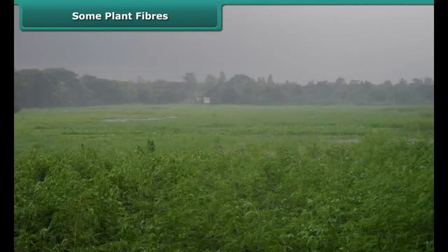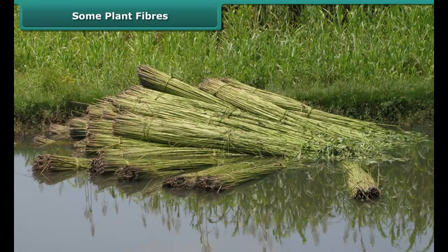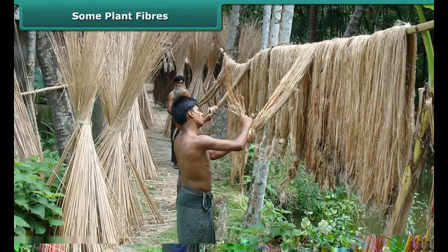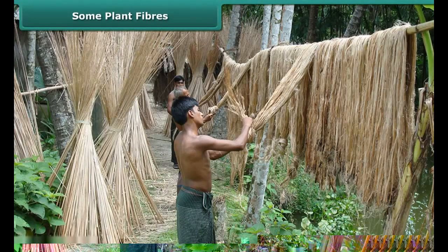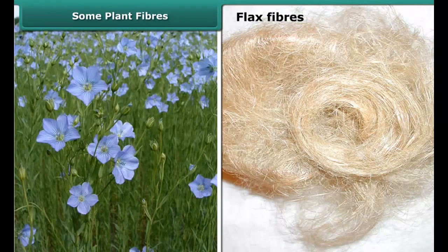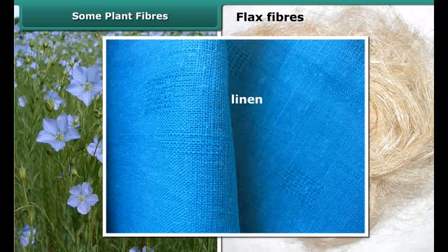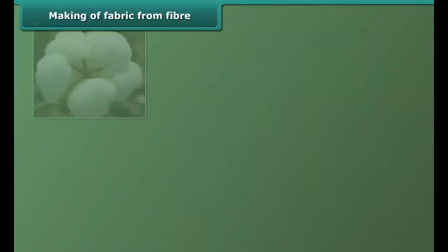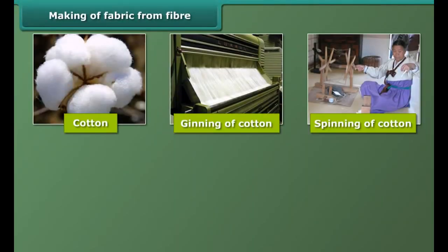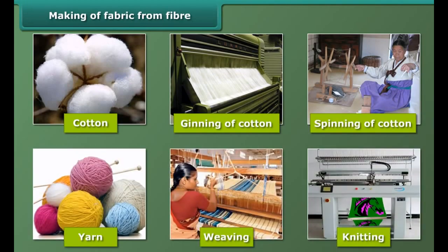Jute fiber is obtained from the stem of the jute plant. It is cultivated during the rainy season. The stems of harvested plants are immersed in water for a few days, then the stems rot and fibers are separated by hand. Flax fibers are also obtained from the stems of the plant and are used mainly to make linen.